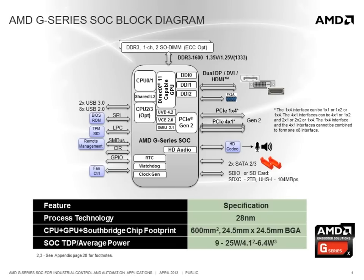Looking at the full complement of I/O available on the SOC: the single channel memory interface can support one or two SODIMM modules, and we also have reference designs showing how to put the memory down on the board. It supports dual independent display interfaces with resolutions beyond HD and still has a standard VGA output if needed. It has several Gen 2 PCI Express interfaces to support high speed I/O devices. A standard HD audio interface is available, and a high speed dual channel SATA interface provides support for flash media or disk drives.